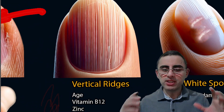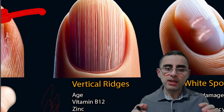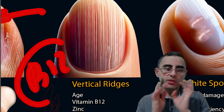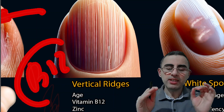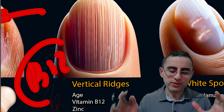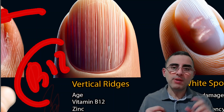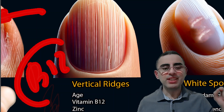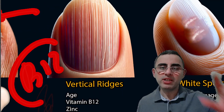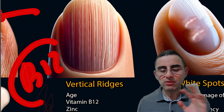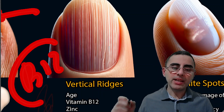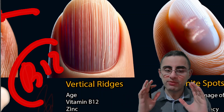Vertical ridges are another nail change, and they usually indicate vitamin B12 deficiency. The chance of vertical ridges increases with age, and it can be part of the normal aging process. But sometimes it can be caused by vitamin B12 deficiency, zinc deficiency, and sometimes psoriasis and rheumatoid arthritis. Autoimmune diseases can also cause vertical ridges on the nails.